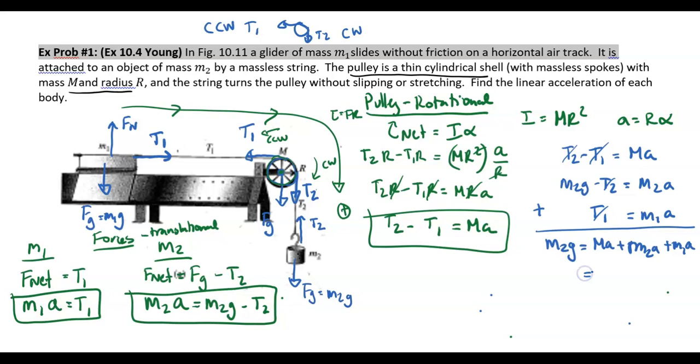So there's A in every single term on the right-hand side. I'm going to factor out an A and then we have M plus M2 plus M1. And then this is all equal to M2G.